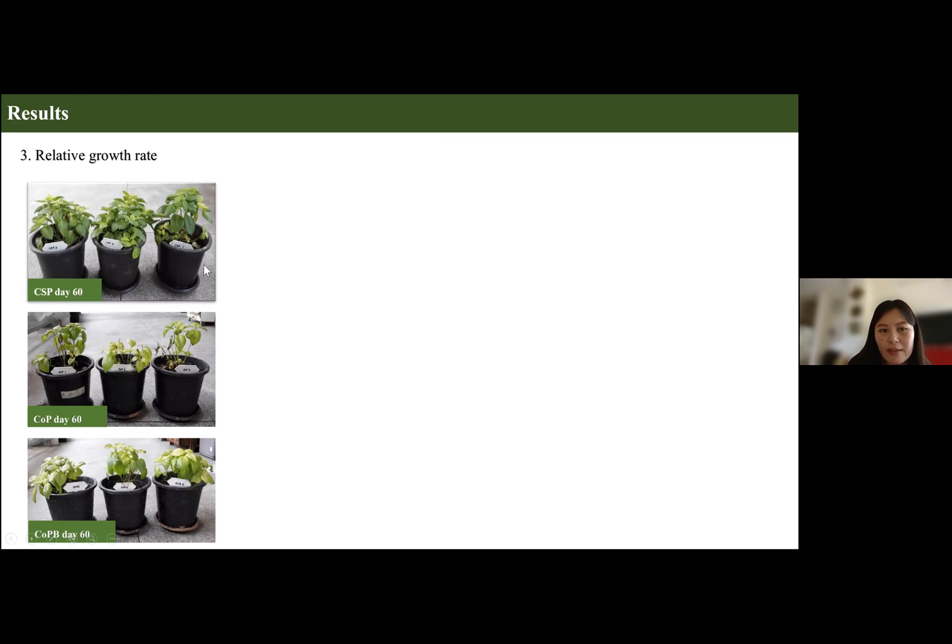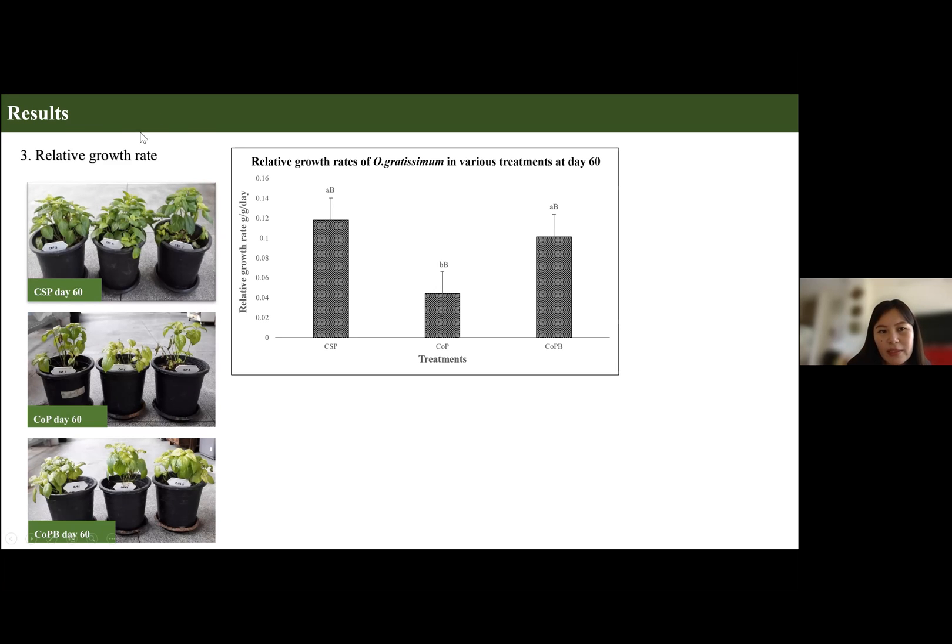I also calculated the growth rate. At the end of 60 days, each treatment had three replicates. I harvested these plants, dried them, and based on dried biomass, I calculated the relative growth rate. The highest growth rate was observed for plants grown in clean soil. The second treatment where plant was grown in contaminated soil without bacteria had the lowest growth rate. Comparatively, the plant grown in contaminated soil in the presence of bacteria had a better growth.